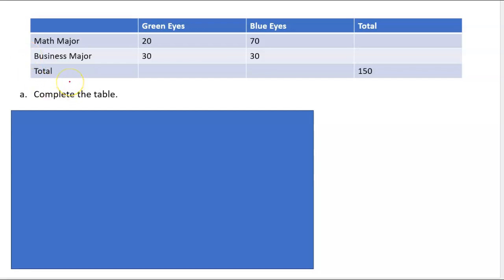We're going to work some more with probability, but we're going to get in a little bit deeper with the different types of probability. So first thing we're going to do is work from a table. We have math majors and business majors, and we have green eyed people and blue eyed people, and we are going to first complete the table.